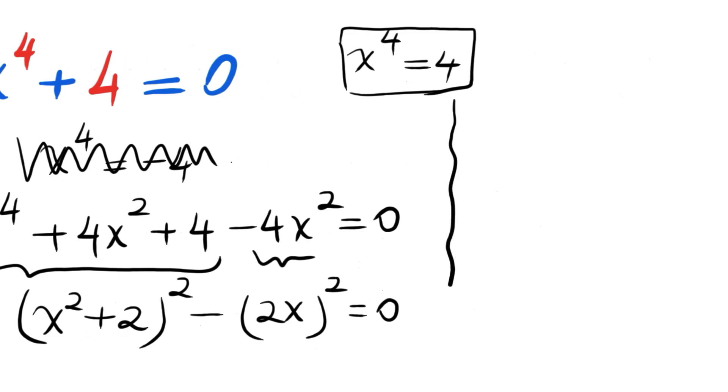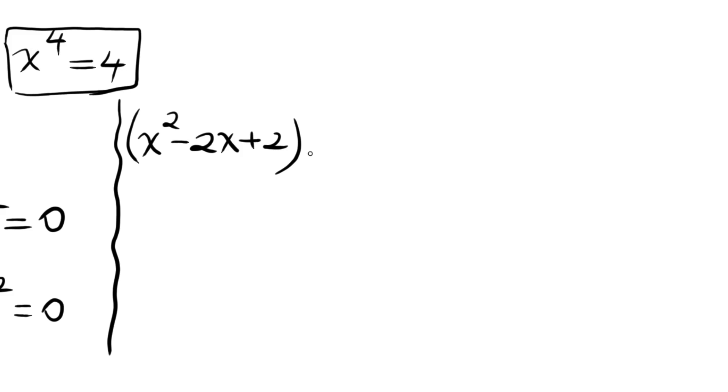Let me write that again: (x squared minus 2x plus 2) times (x squared plus 2x plus 2) equals 0. Now we have two quadratic equations.